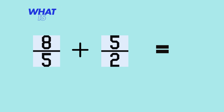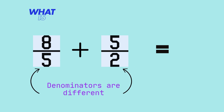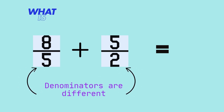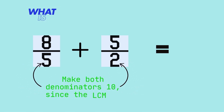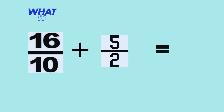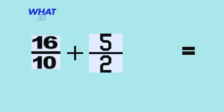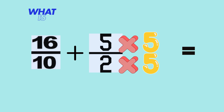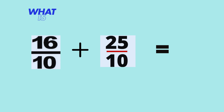The problem is now eight-fifths plus five-halves. Notice the denominators are different. We will make both denominators ten, since the least common multiple for five and two is ten. For the fraction eight-fifths, we will multiply both the denominator and numerator by two. So, eight-fifths is now rewritten as its equivalent sixteen-tenths. For the fraction five-halves, we will multiply both the denominator and numerator by five. So, five-halves is now rewritten as its equivalent twenty-five-tenths.